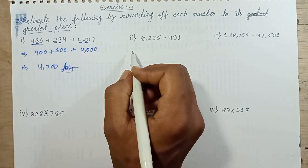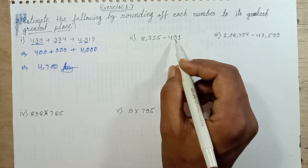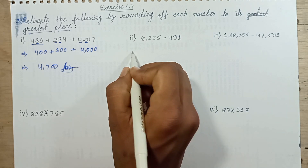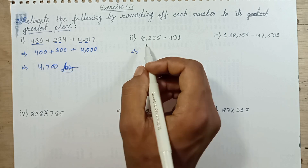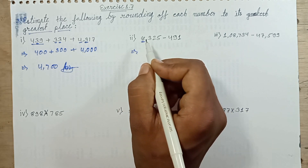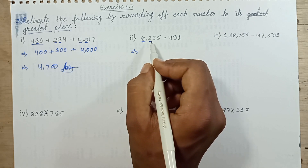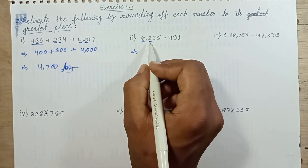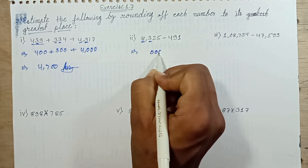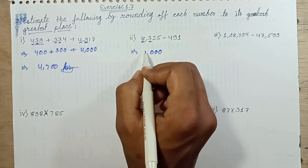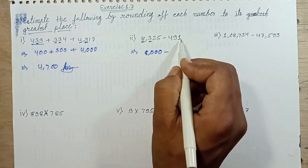Next question: 8325 subtract 491. The greatest place in this number is the thousands place. Thousands place digit is 8 and hundreds place digit is 3. Rounding this number: 3 replaced with 0, 2 replaced with 0, and 5 replaced with 0. And 8 stays in its place.